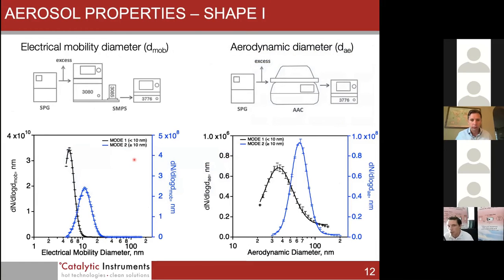Aerosol properties in more detail. On the left we have a typical SMPS setup - SPG going to an SMPS. On the right we have aerodynamic diameter - SPG going to the combustion AAC and then a CPC. Mode one and mode two are essentially showing the same properties depending on how you're looking at the aerosol. On the left we're looking at electrical mobility diameter, and on the right we have the much larger in effect because of the density, aerodynamic diameter.